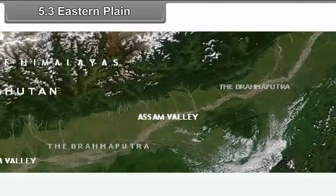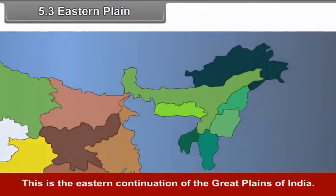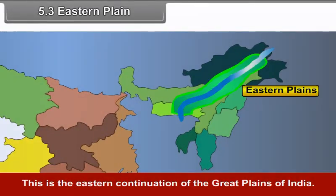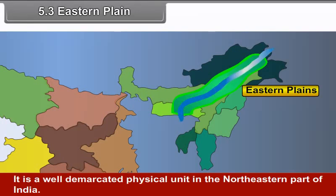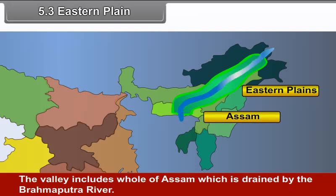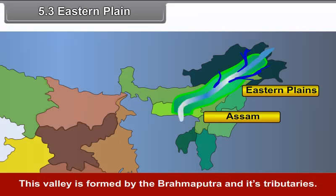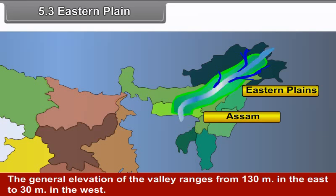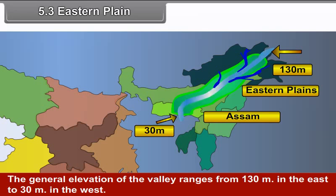5.3 Eastern Plain. This is the eastern continuation of the Great Plains of India and is a well-demarcated physical unit in the northeastern part. The valley includes the whole of Assam, which is drained by the Brahmaputra River. This valley is formed by the Brahmaputra and its tributaries. The general elevation ranges from 130 meters in the east to 30 meters in the west. Geologically, the valley is formed by the deposition of alluvium approximately 1500 meters thick.